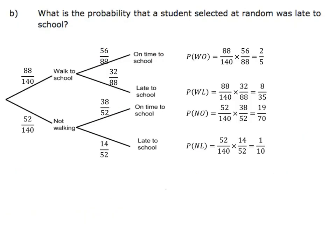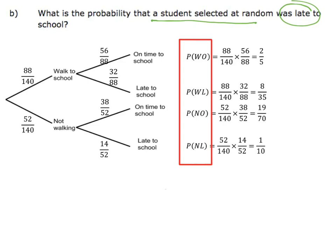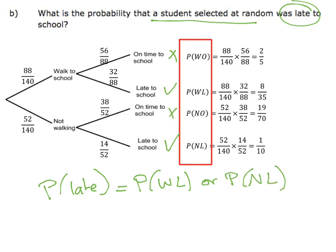Let's have a look at another question. What's the probability that a student selected at random was late? I need to look at all my combinations and identify which involve being late. Walking and on time — doesn't include it. Walking and being late — that does. Not walking and on time — doesn't. Not walking and being late — that does. So the probability of being late is either walked and were late, or did not walk and were late. In probability, 'or' means add. So 8 out of 35 plus 1 out of 10 gives us 23 out of 70.